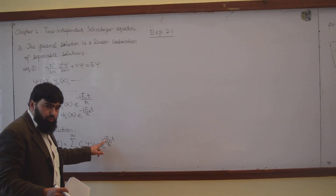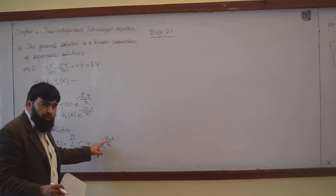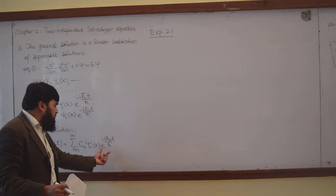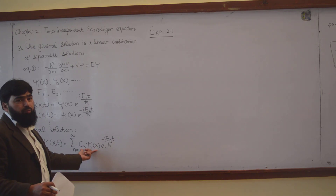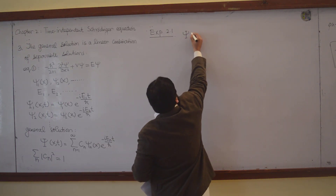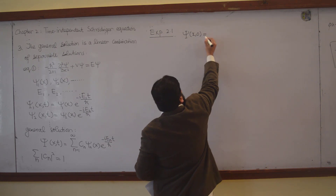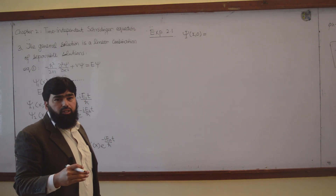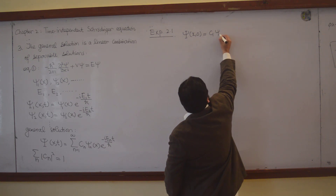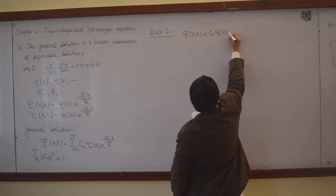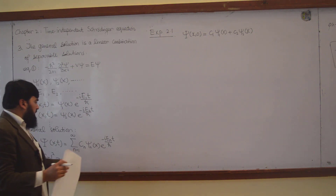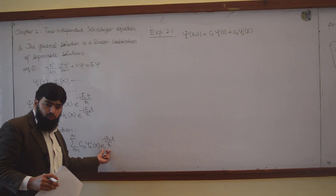When we put time equal to zero, e to the power of zero equals one, so the time-dependent exponential terms disappear. The initial wave function Ψ(x, 0) is simply C1 ψ1(x) plus C2 ψ2(x) — the particle starts out in this state.